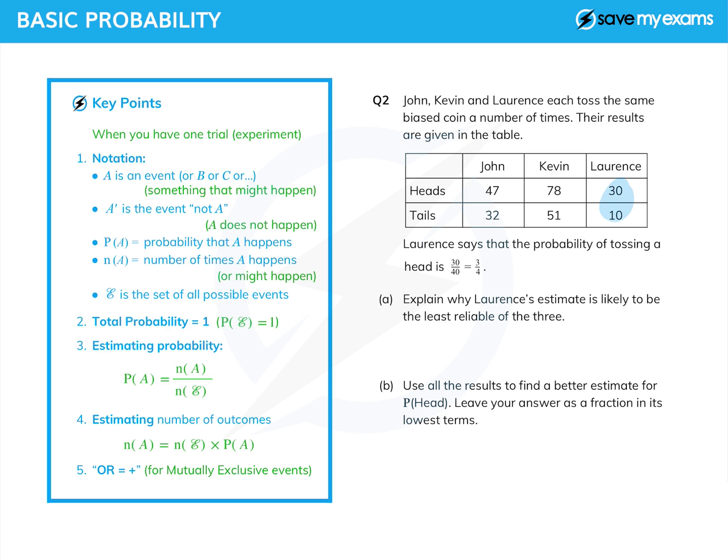Lawrence looks at his figures and he says, so the probability of tossing a head is three quarters, because it's 30 out of 40.